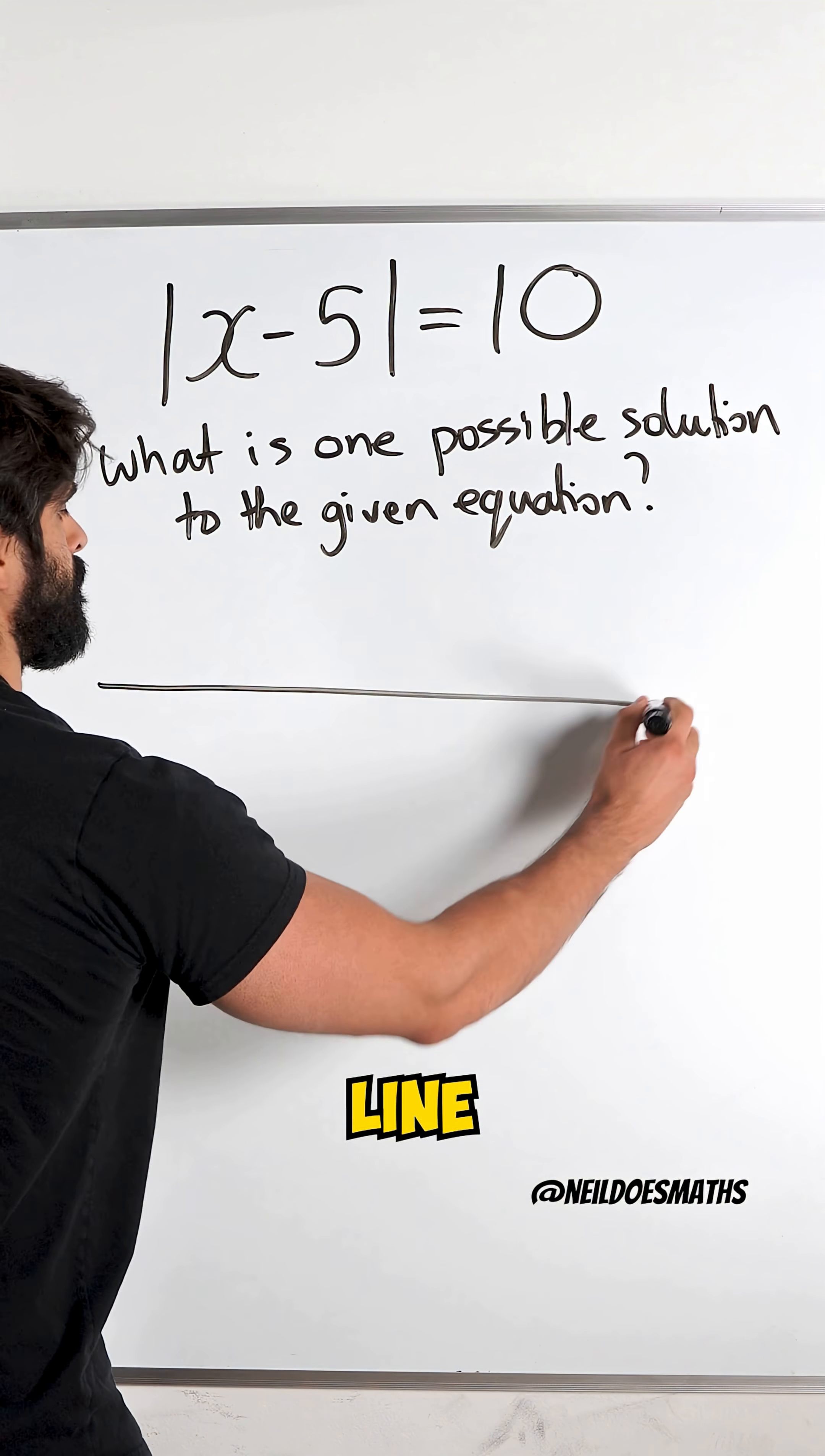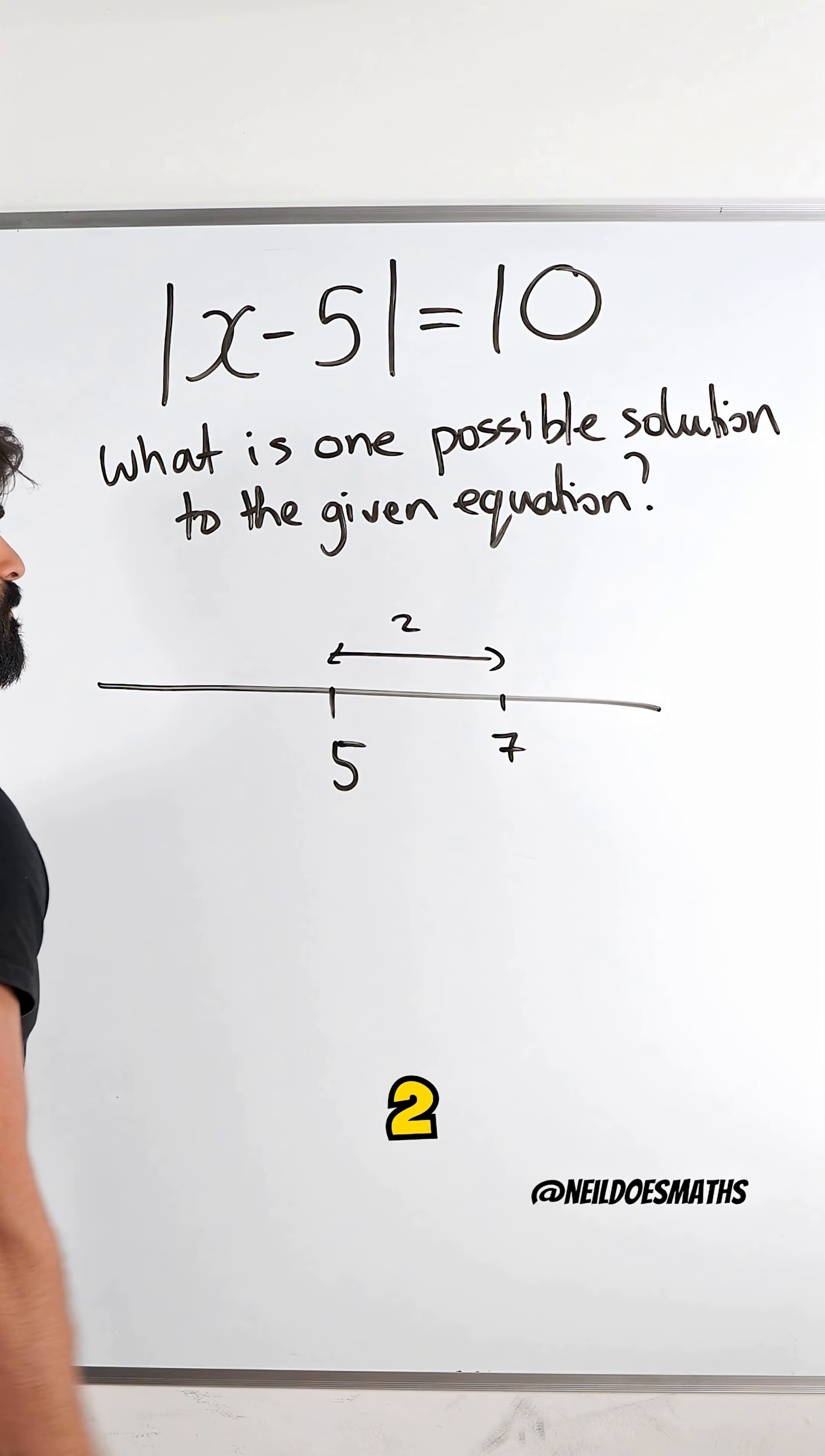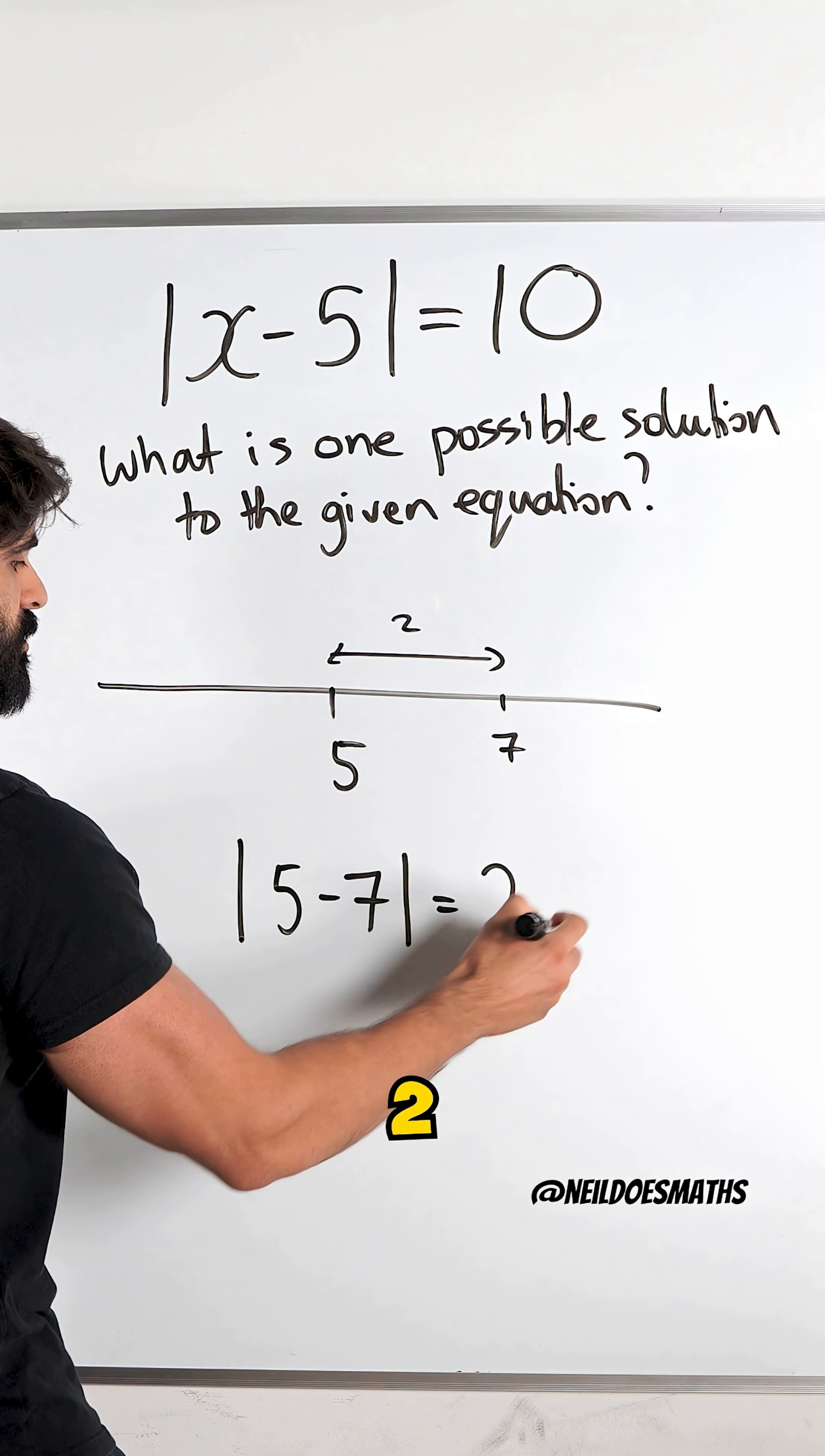Now if we look at a number line, and I put 5 here, let's look at a random number, for example, 7. The distance between them is 2. So if I was to put that in modulus form, I would say the modulus between 5 and 7 is 2.